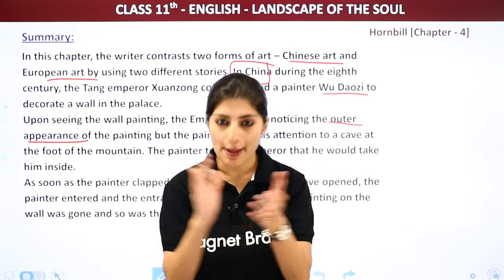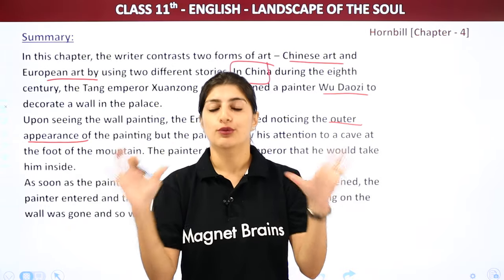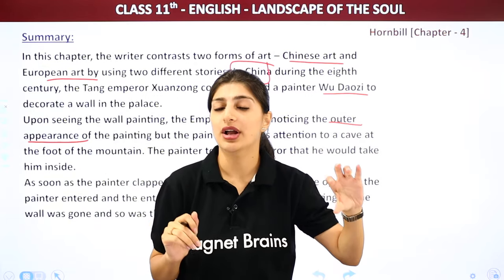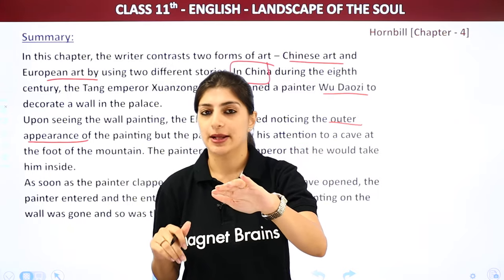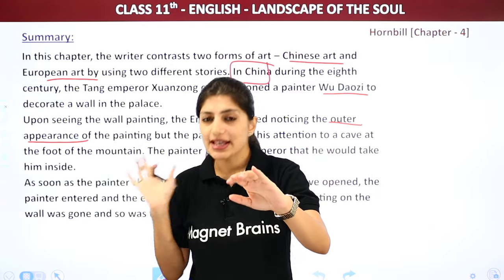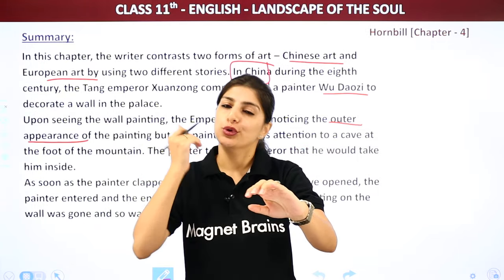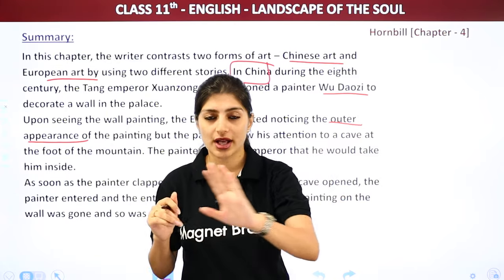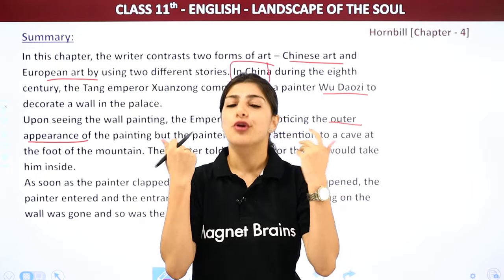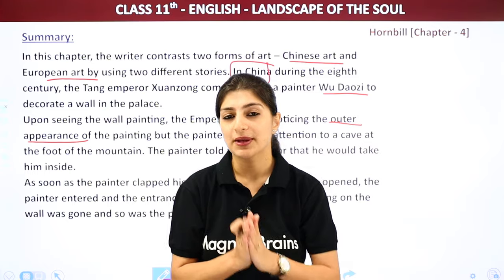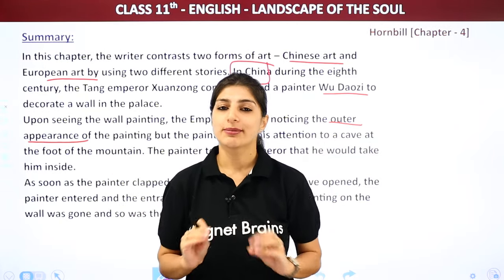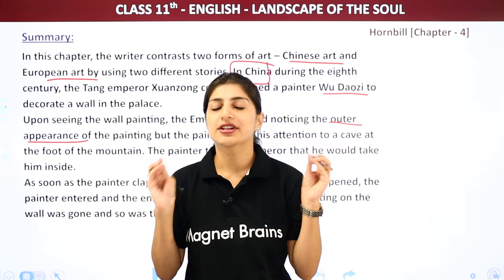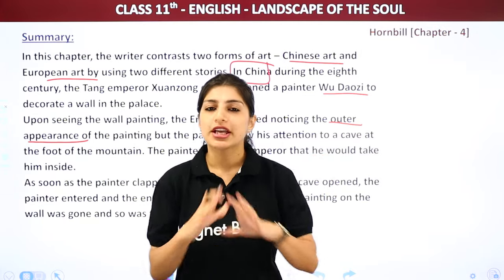Jaaise hi painter ne clap kiya, woh jo cave ka darwaza tha, woh painting ke andar khula. Painter us ke andar enter kar gaya. Jaise hi king enter karna hi wala tha, usse pehle hi, jo gufa ka darwaza tha, wo band ho gaya. Aur jo painting thi, woh is wall se gaib ho gayi, aur woh Douzi naam ke painter bhi wahan se gaib ho gaye. Aur uske baad kisiko na unka brush mila, na kabhi wo Douzi is duniya mein dikhne ko mili.